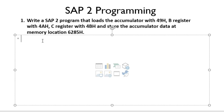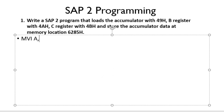So now let's proceed. At first, we need to load the accumulator with 49H. To load the accumulator with data, we have our SIP2 instruction MVI. So MVI A, then after the data we are going to load — MVI A 49H will load 49H into the accumulator.